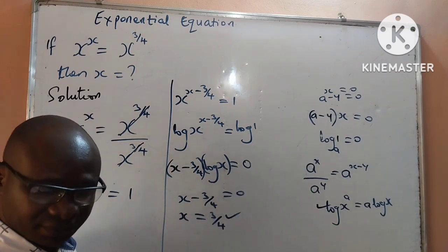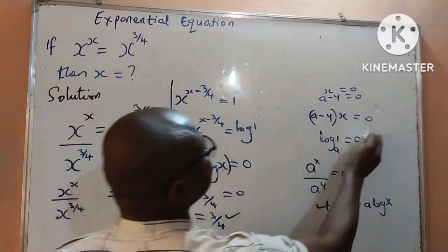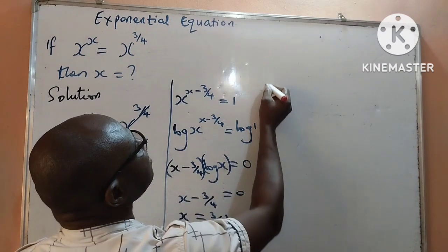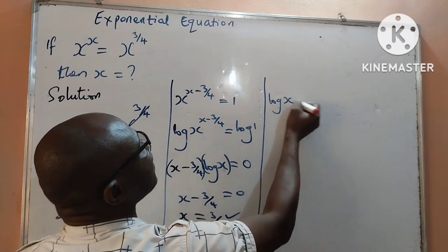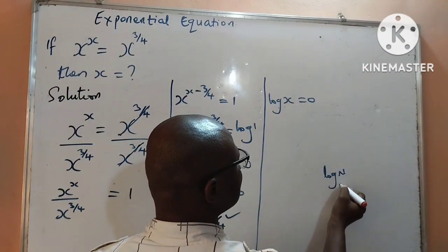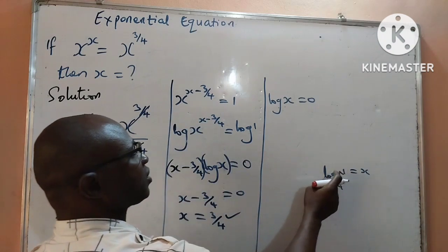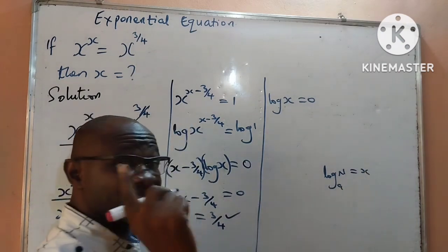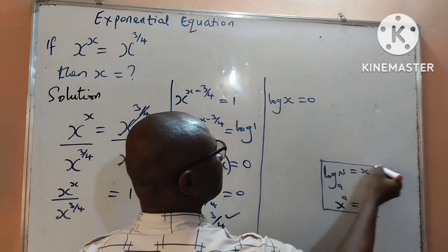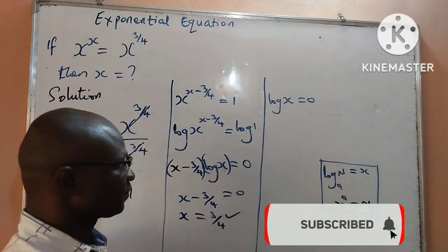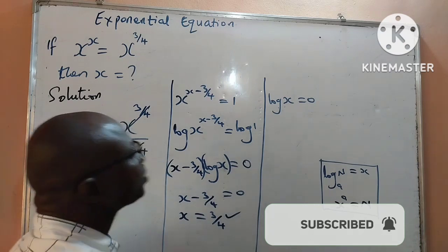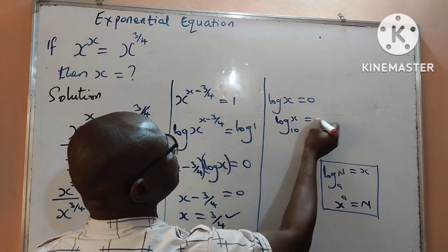The first value of x is 3 over 4. For the second bracket, if I have log of x equal to 0 — by the definition of logarithms, log of n to base a equals x means a to the power x equals n. Whenever a log is written without a base, it assumes base 10. So I can write this as log of x to base 10 equal to 0.